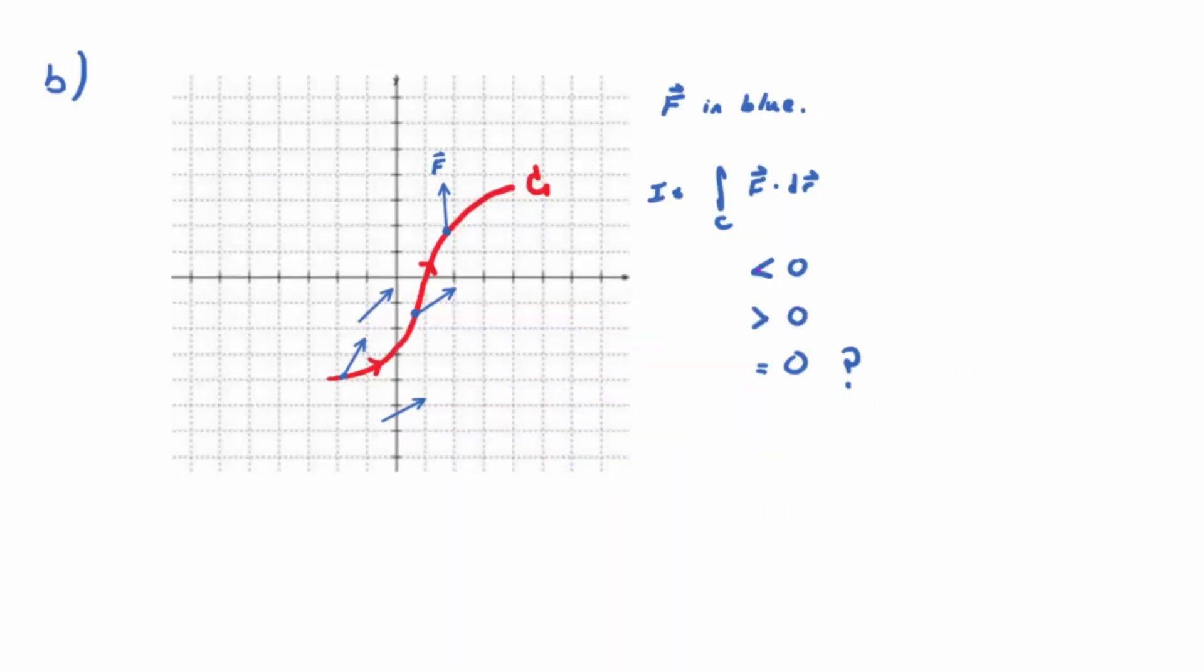Now look at what's happening. We've got the vectors from F in blue here, we've got our curve in red. Look at how it's oriented, kind of traveling north, east a little bit. And it's the same question. Do you think the value of the integral over C, F dot DR, the line integral with respect to the vector field, do you think that's going to be less than zero, greater than zero, equal to zero?